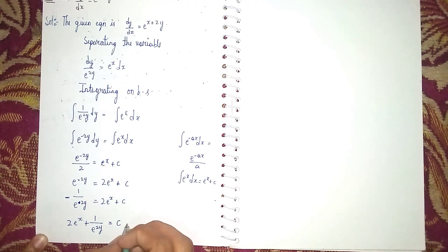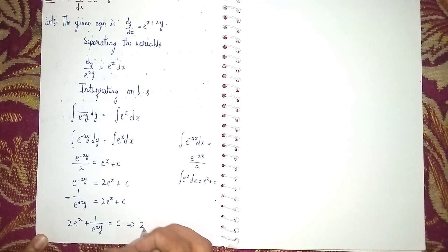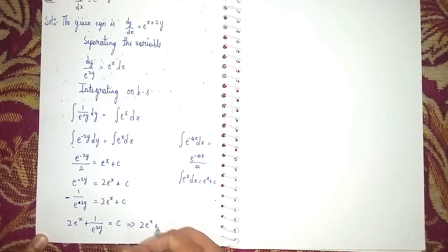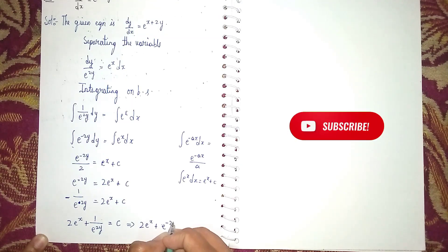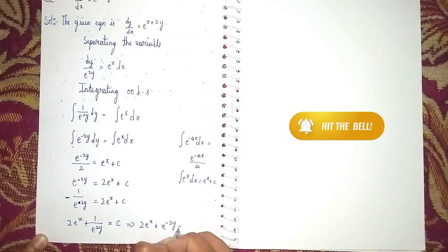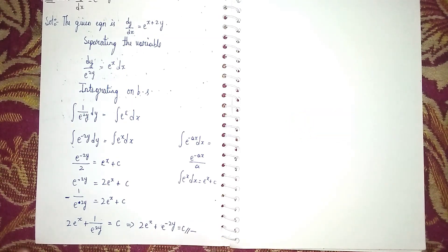Finally, sending e^(2y) upside gives us: 2e^x + e^(-2y) = c. This is our answer. Thanks for watching.